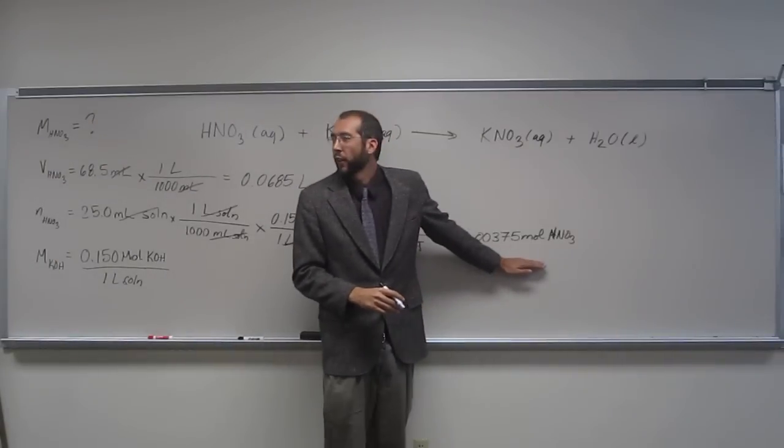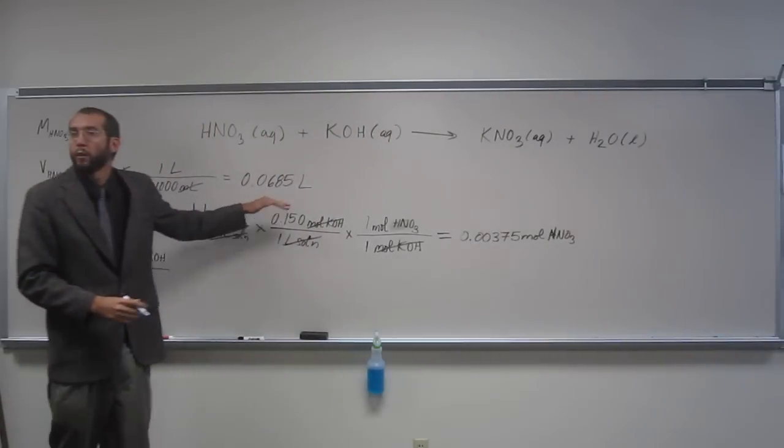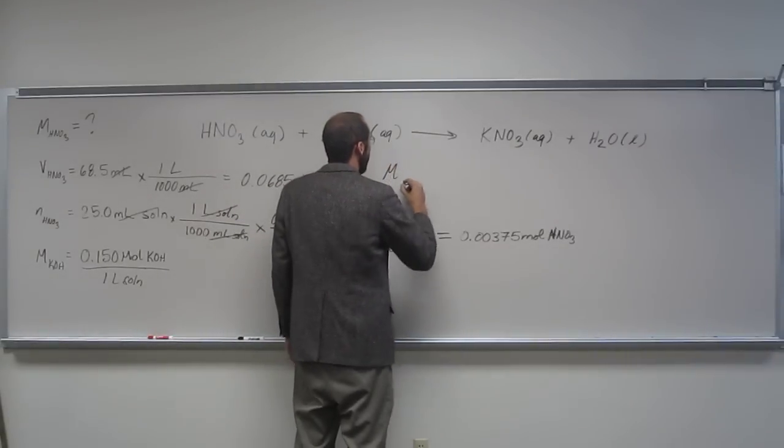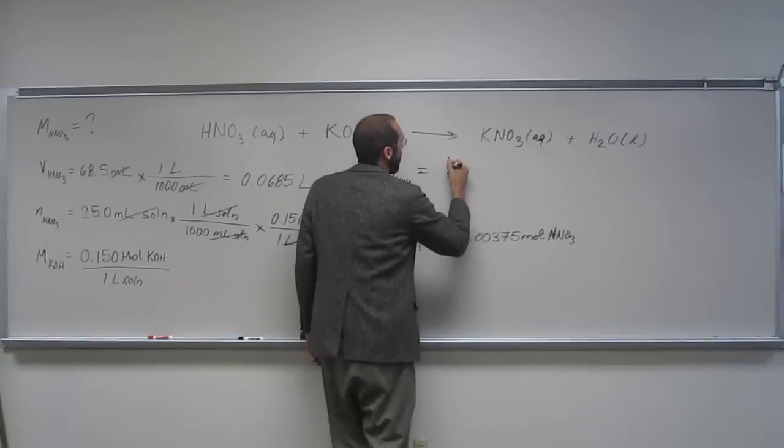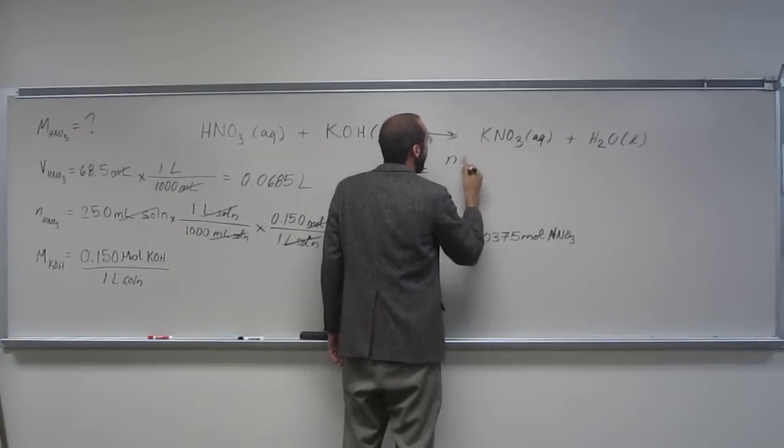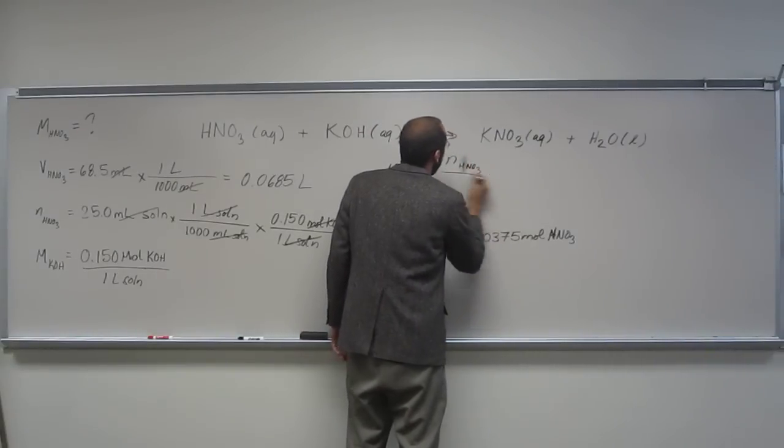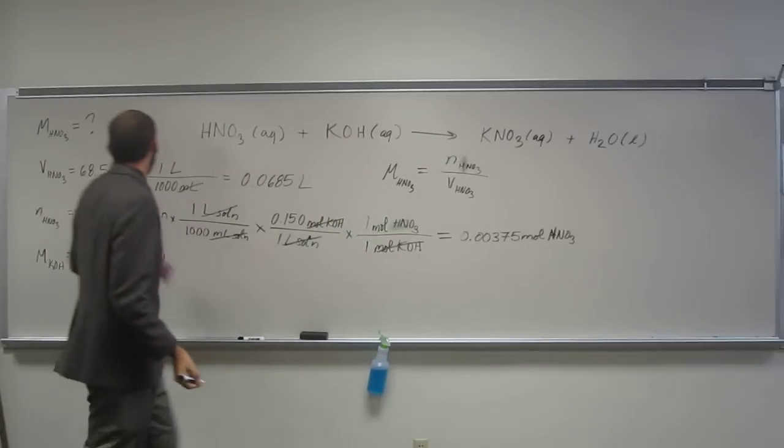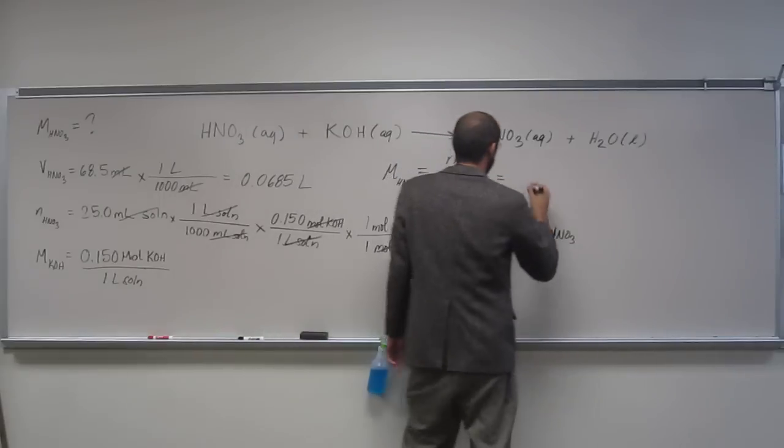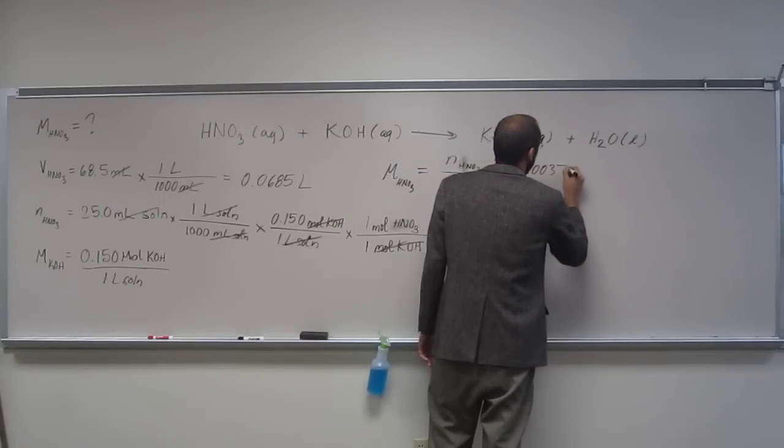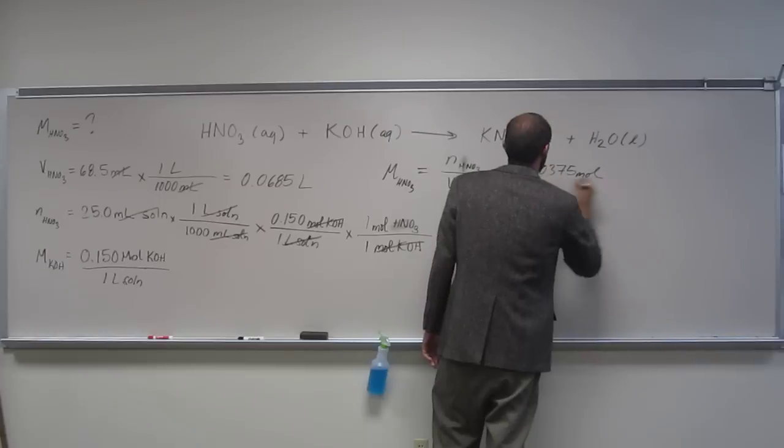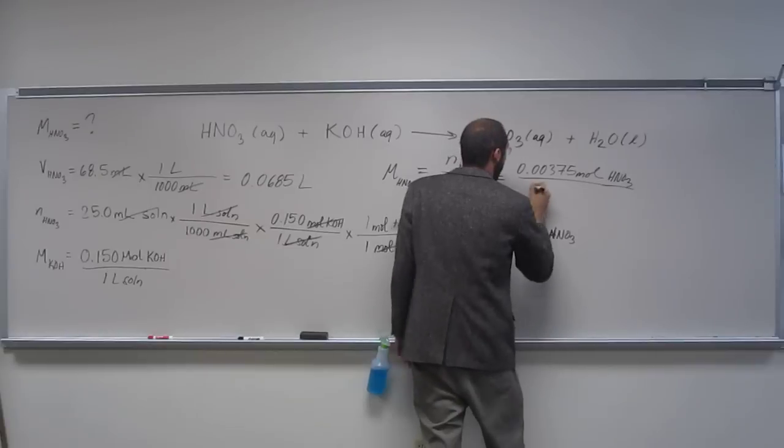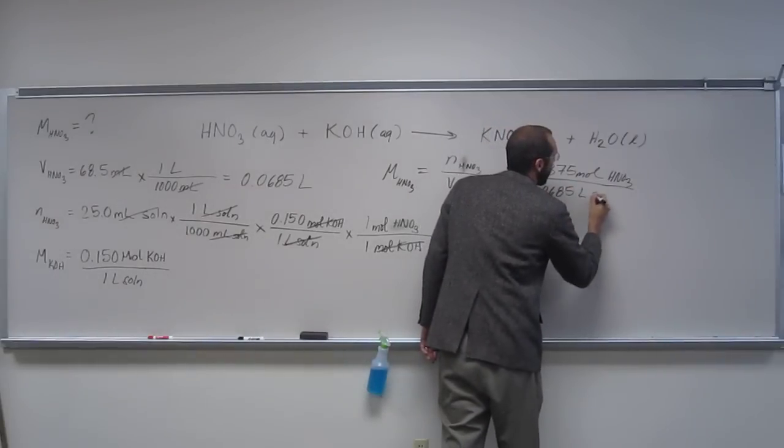So notice what we have here now, we have the moles of nitric acid, right, and we have the volume of nitric acid. Should we be able to find the molarity from that? Yeah. Why? Because molarity of nitric acid is going to be what, the number of moles of nitric acid over the volume in liters of nitric acid, right? And we've got that, and we've got that, so let's just plug and chug it. So 0.00375 mol of HNO3 divided by 0.0685 liters of solution.